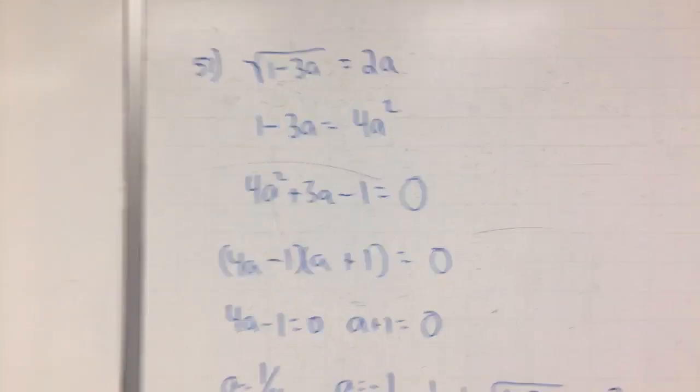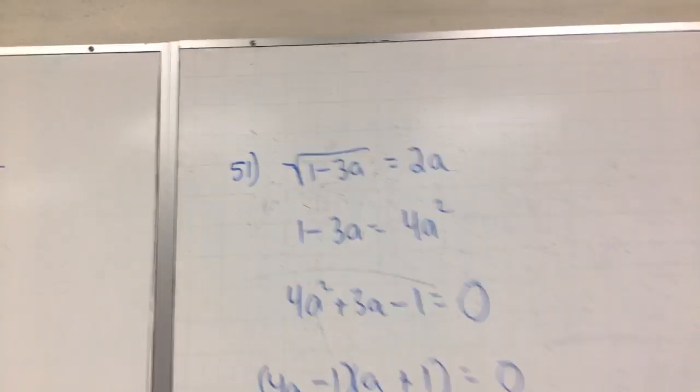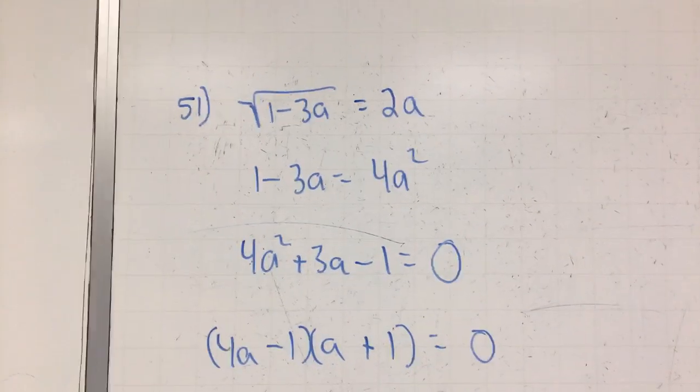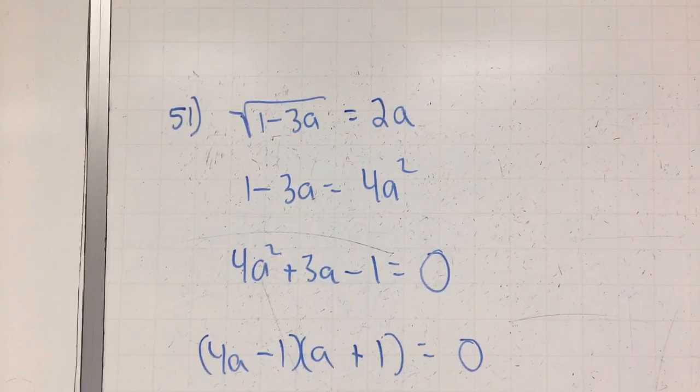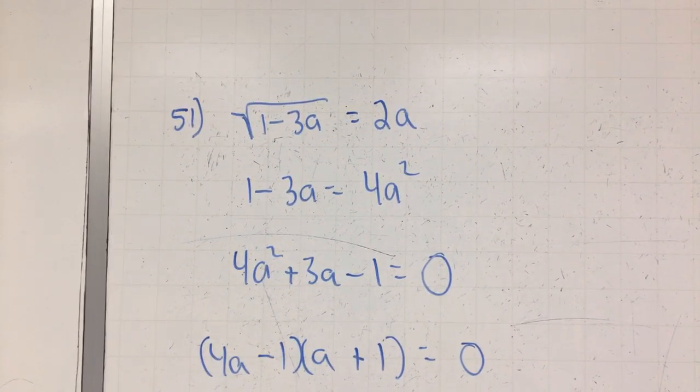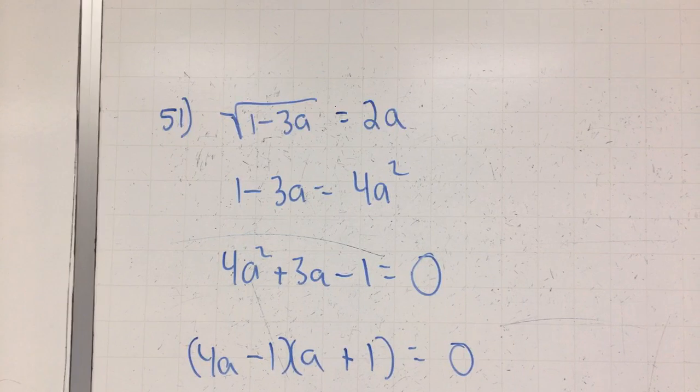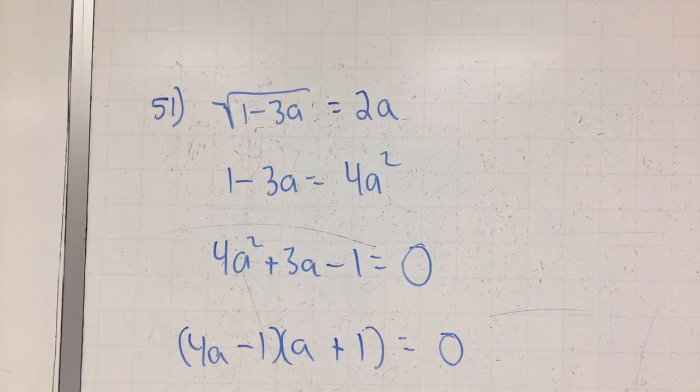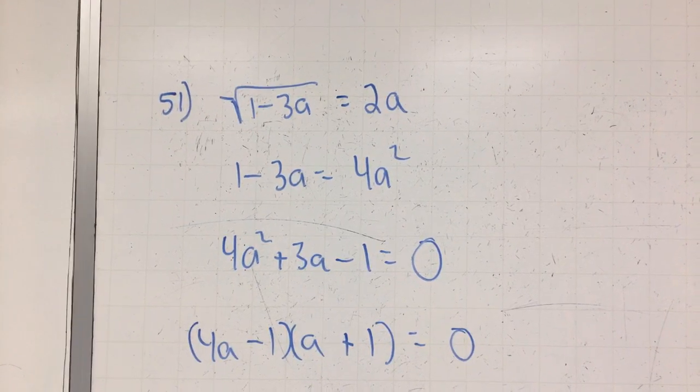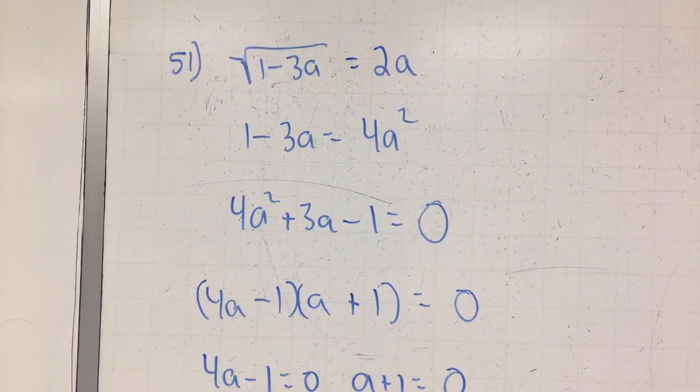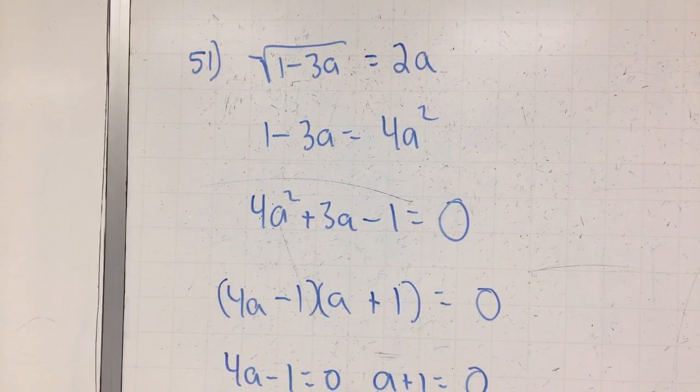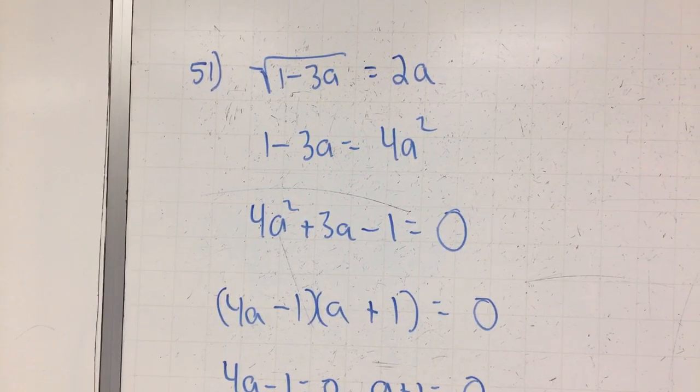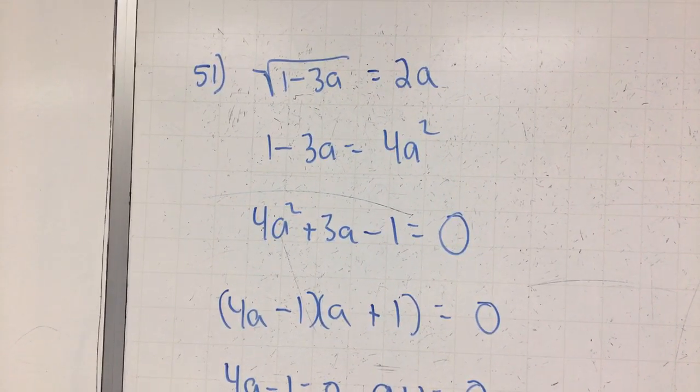Number 51. Now, 51 is a little different because it asks you to check your answers. And you're going to see why here in just a second. So 51. You start with the square root of 1 minus 3A is equal to 2A. Square both sides. Please don't forget to square everything. 2 squared is 4A squared is A squared. Now, I'm going to set it equal to 0. 4A squared plus 3A minus 1 is equal to 0.